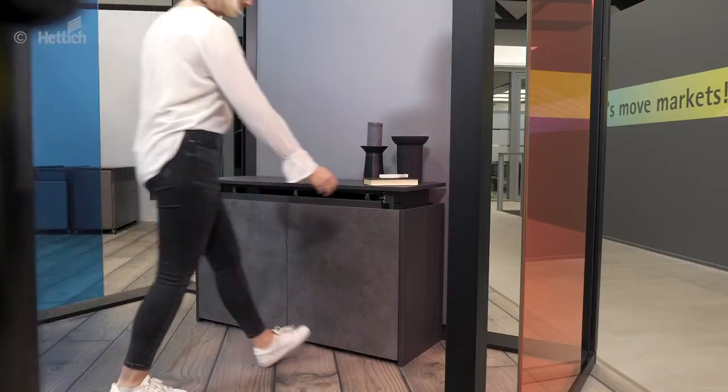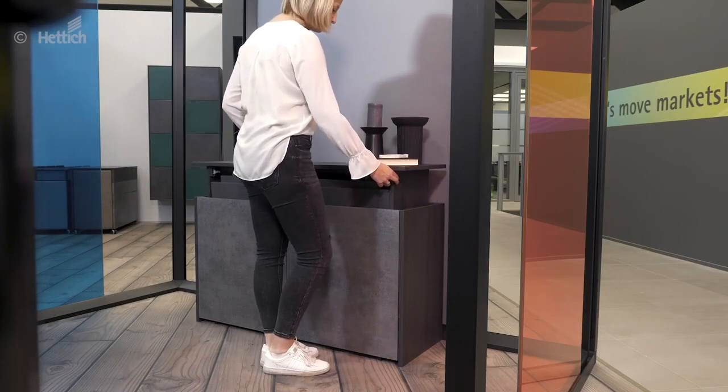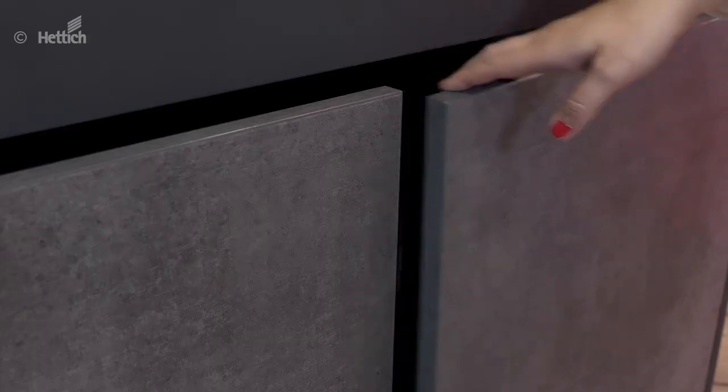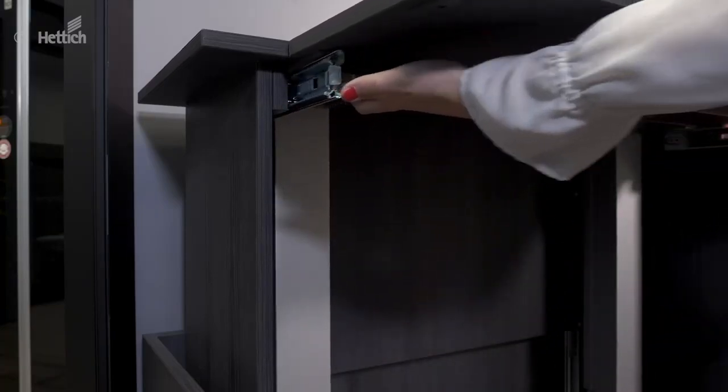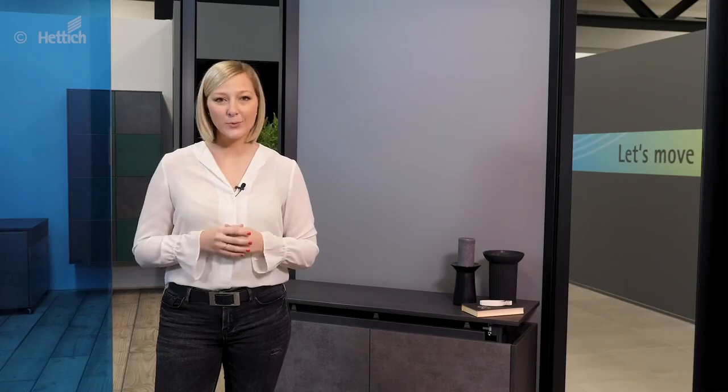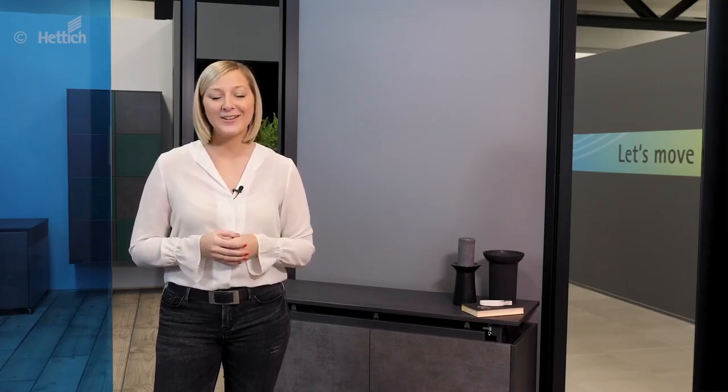In addition to clever storage space options, this home office can be enlarged in just a few steps. By folding up, the table expands the work surface and creates enough space to work. Ergonomically optimized height adjustable tables, which make temporary standing more comfortable, are becoming increasingly popular in offices.